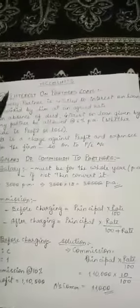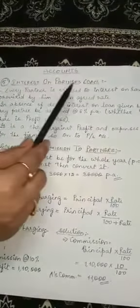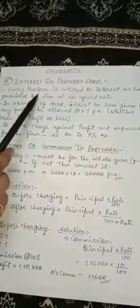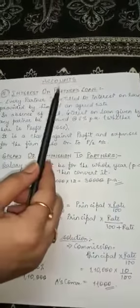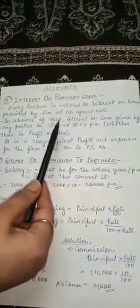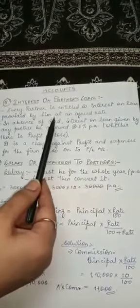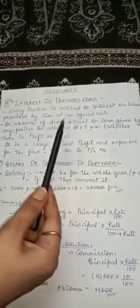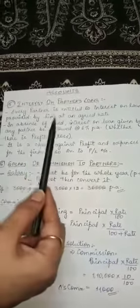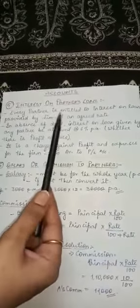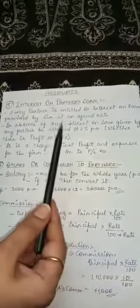First of all we will discuss about interest on partner's loan. Interest on partner's loan means every partner is entitled to interest on loan provided by him at an agreed rate. That means sometimes the firm takes a loan from their partners, and on that loan the firm has to pay interest to the partner. The partner is actually entitled for that as a loan given by an outsider, so it is treated as a loan given by the outsider.